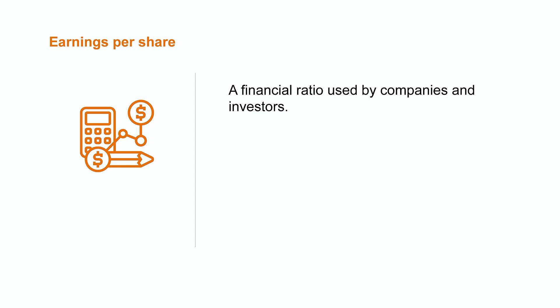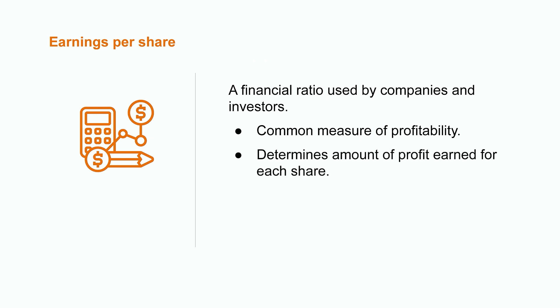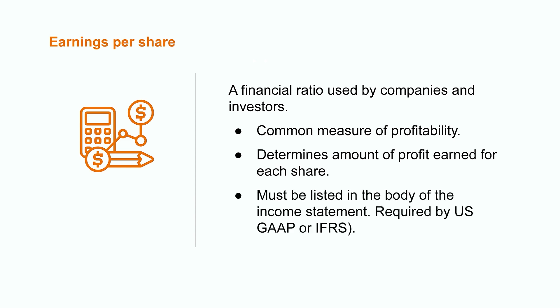Earnings per share is a financial ratio used by companies and investors as a common measure of profitability. This ratio allows us to determine the amount of profit earned for each of the company's shares on the market. Public companies that report their financials under US GAAP or IFRS are actually required to list their earnings per share data directly in the body of their income statement.